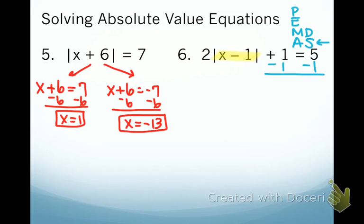A lot of you have been dividing first, so be very careful. So this part cancels, everything else is going to stay exactly the same. Two times the absolute value of x minus one equals four. Now that we took care of our addition and subtraction, now we need to divide by two. So I get the absolute value of x minus one is equal to two.